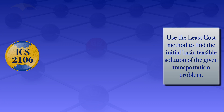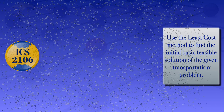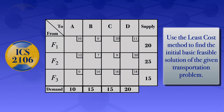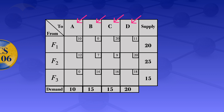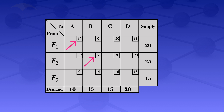In this video, I'm going to use the least cost method to find the initial basic feasible solution of a transportation problem that has three sources and four destinations A, B, C, and D. What we are having in those small squares are the unit costs.